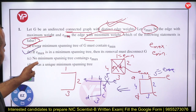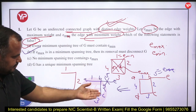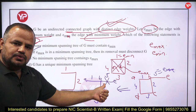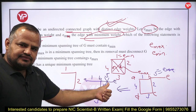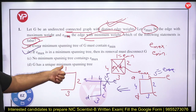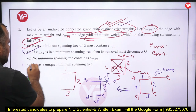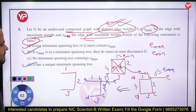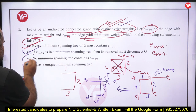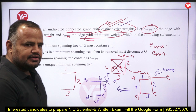Third statement: no minimum spanning tree contains E_max. This is wrong because there may be a case where E_max is included. Fourth statement: G has a unique minimum spanning tree because edge weights are distinct — G always has a unique MST. So the false statement is C, and C is the correct option.